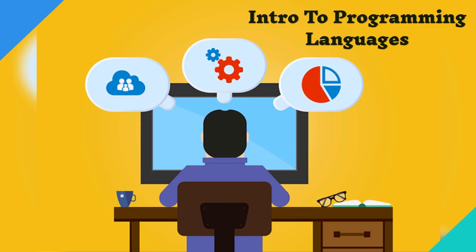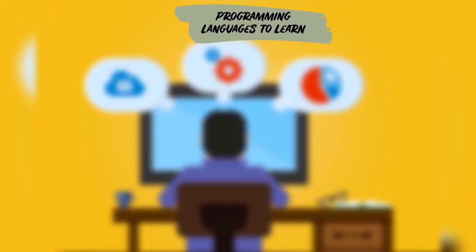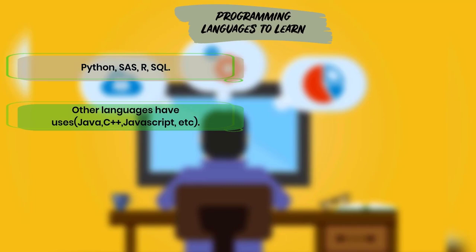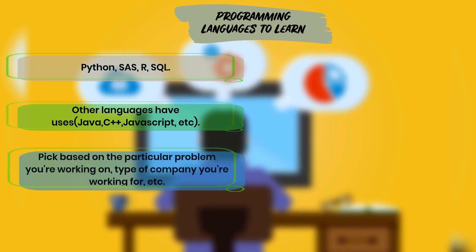One of the more common questions when starting out in data science is: what programming language should I learn? I'm going to cover the four most important languages: Python, SAS, R, and SQL. You should choose a language that will help you solve the particular problems you'll be working on. It's also going to depend on the company you work for, the type of problems you'll face, and the role you have — whether that's data scientist, data analyst, business analyst, database engineer, data engineer, research scientist, software engineer, statistician, or project manager.